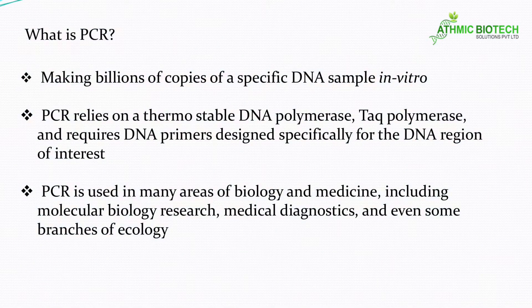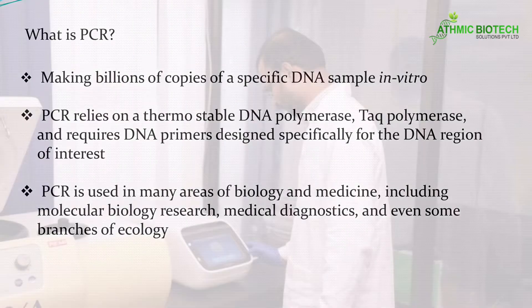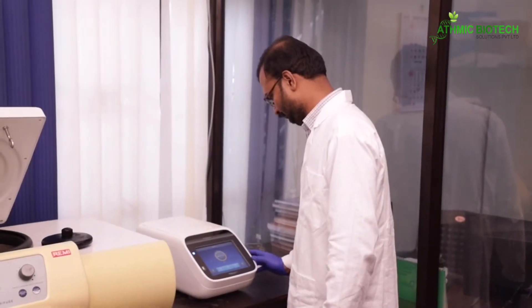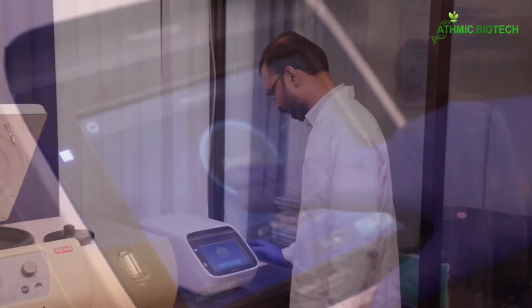So first of all, what is PCR? PCR is used for making billions of copies of a specific DNA sample in vitro. The machine used for doing PCR is called a thermal cycler.